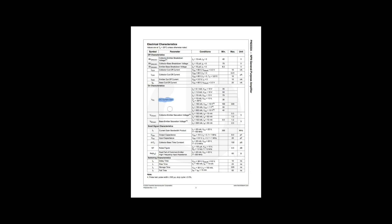On page three there's one relevant item: DC current gain, a very important theoretical concept for transistors. You'll remember that a transistor is a power amplifier - you can take a small amount of power and use it to control a very large amount. For example, if you apply 0.1 watts to the base and it switches a 1-watt load, you have a DC current gain of 10. The datasheet shows for specific collector current and collector-emitter voltage values what the minimum gain is - the transistor will perform at least that well under those conditions.